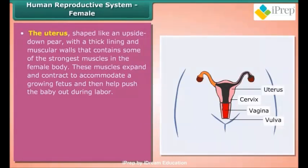The uterus is shaped like an upside-down pear with a thick lining and muscular walls that contain some of the strongest muscles in the female body. These muscles expand and contract to accommodate a growing fetus and then help push the baby out during labor.